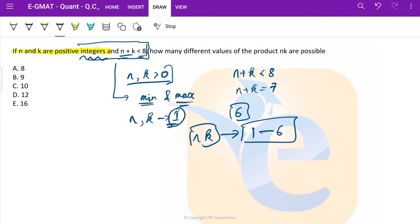Now moving ahead, how many different values of the product n k are possible? So we have to take out product n k.